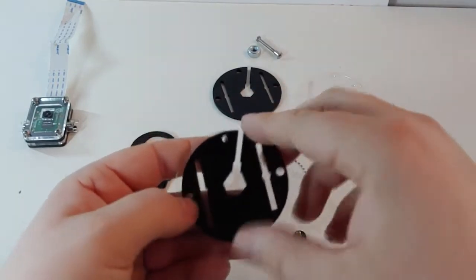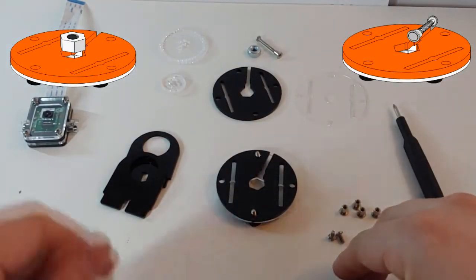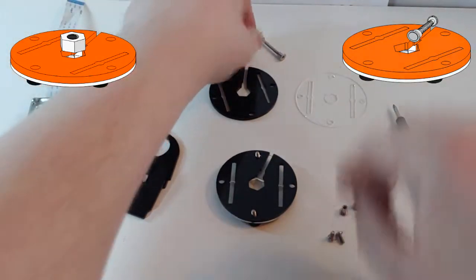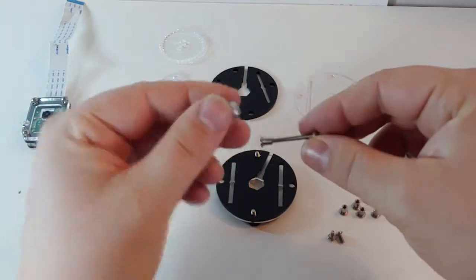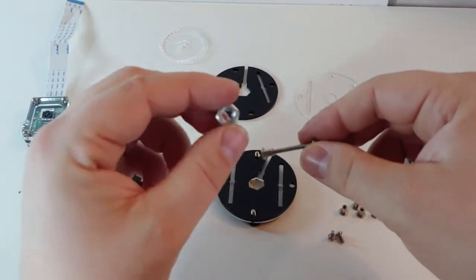Next, take one of the black lamppost plates and line the holes up with the screws as well. Here you have the option of either using a hex nut or a one and a half inch screw as a mounting hardware for your case.